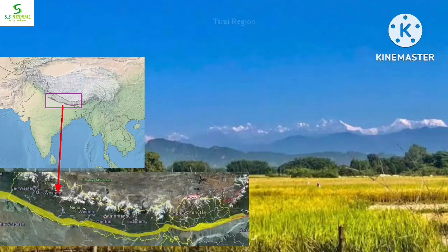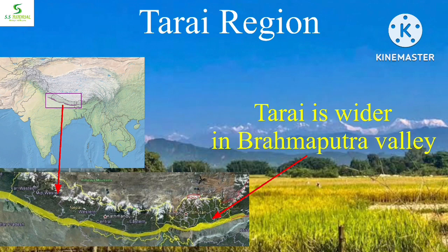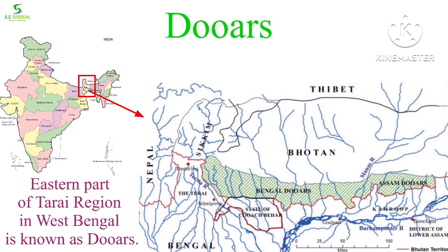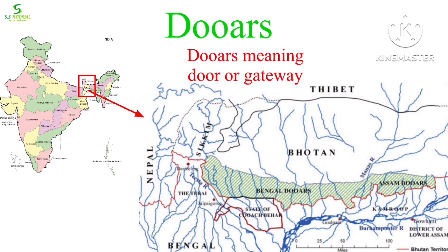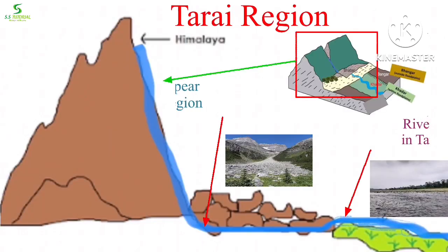Tarai region is about 10 to 20 kilometers wide and elevated 67 to 300 meters from mean sea level. It is wider in the eastern part, particularly in the Brahmaputra Valley, due to frequent rainfall. The eastern part of the Tarai region in West Bengal is known as Doors, meaning 'doors' or 'gateway,' demarcated by the river Tista. It is the gateway between the hills of Bhutan and the plains of India.